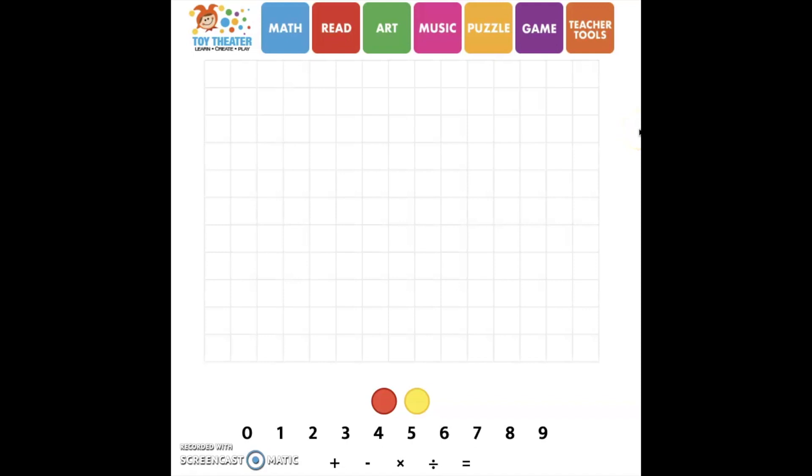So if you don't have manipulatives at home, like I did, where I use the popcorn, or you could use cereal, or anything, where you can count out a large number of items, another option is to use this online tool, which will be linked on the website. I'm using the two color counters with numbers. And it allows you to click and drag the counters and the numbers onto this grid. So I'm going to show you how you can use this to model division equations with manipulatives.